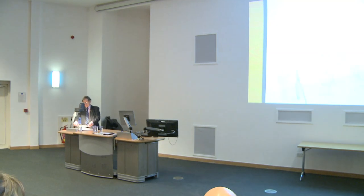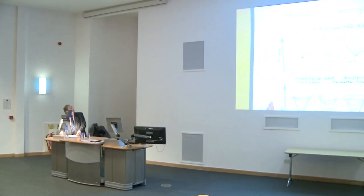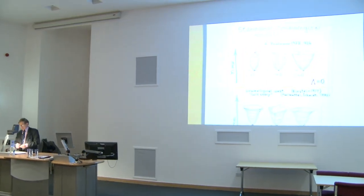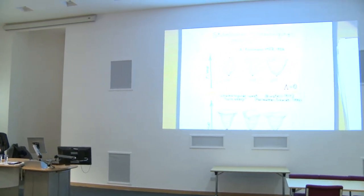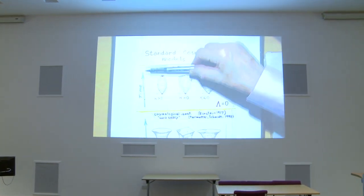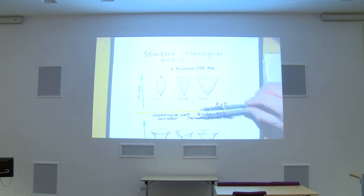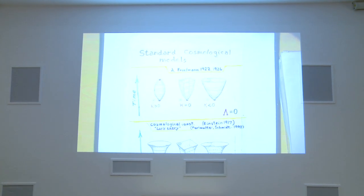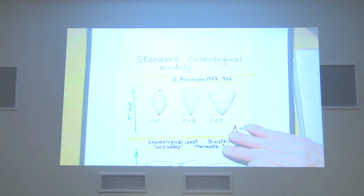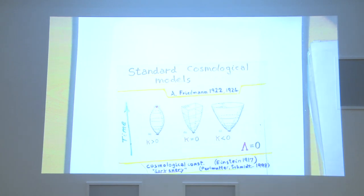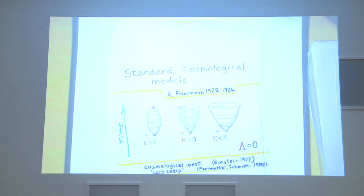Let me talk about the standard cosmologies. These were introduced by Alexander Friedmann in 1922 and 1924. My pictures will tend to be space-time diagrams, so you'll see time going up the page. You have to think of time progressing as cross-sections of these pictures. These are pictures of the three original Friedmann models of the universe, with the Big Bang at the beginning.